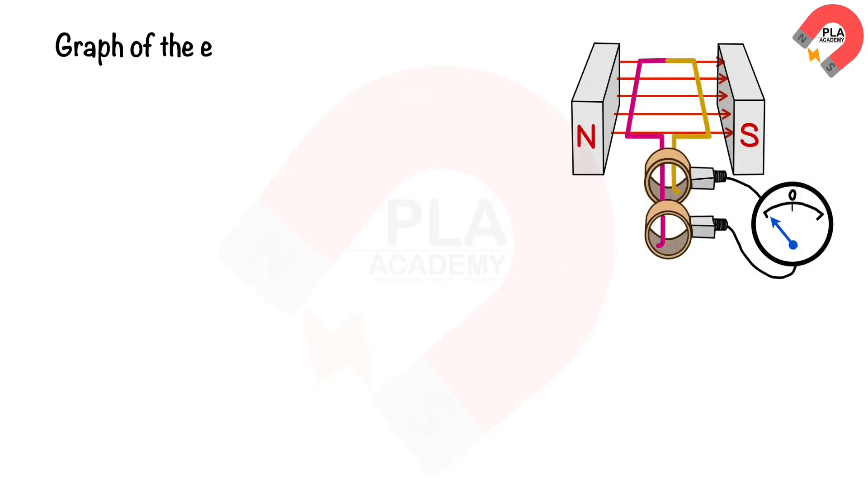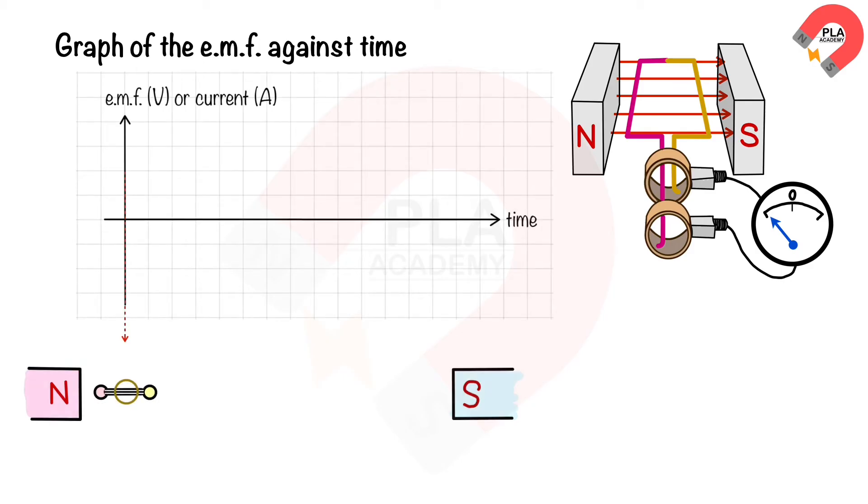Graph of the EMF against time of an AC generator. The maximum EMF occurs when the coil is horizontal. This is because the coil's movement becomes perpendicular to the magnetic field. According to Fleming's right-hand rule, the induced current flows into the page in the pink coil and out of the page in the yellow coil.